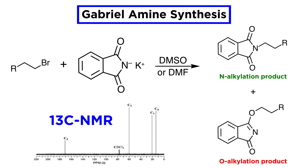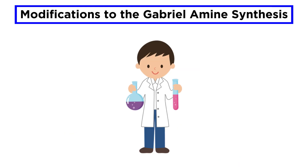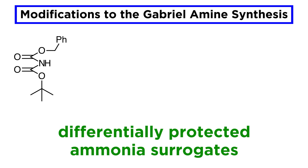It is actually very difficult to distinguish between these two isomeric alkylation products because they have similar spectral characteristics. The distinction requires complex carbon-13 NMR methods. However, hydrolysis of the O-alkylated product ultimately yields an alcohol, which is neutral and can be readily distinguished from the desired amine. It is certainly the case that this synthetic concept has been fine-tuned by chemists over the many decades since its development. One useful variation consists of using differentially protected ammonia surrogates.